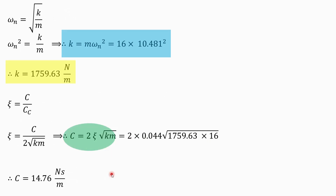We know that omega_n equals the square root of k divided by m. Squaring both sides, omega_n² equals k upon m. Cross-multiplying, k equals m times omega_n squared. With m equal to 16 and omega_n equal to 10.481, the spring stiffness k comes out to be 1759.63 N per meter.